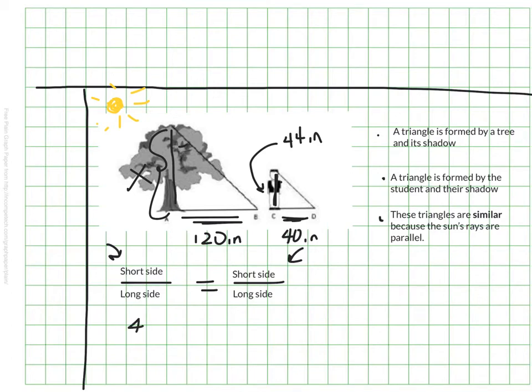But I'm going to make sure that I always match up across from one another this corresponding sides. So I have a 40 inch short side on the shorter triangle and that corresponds to 120 inches on the other. And then I have 44 inches. That's the longer side. That's how tall my person is. But I don't know how tall my tree is.